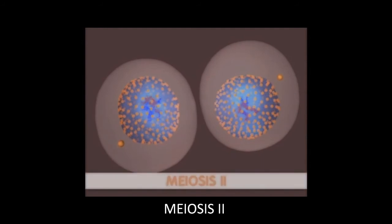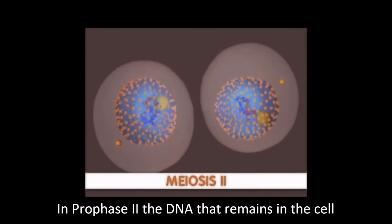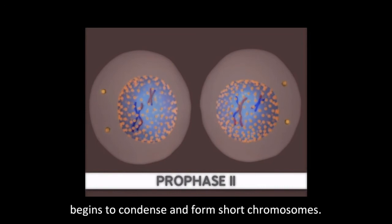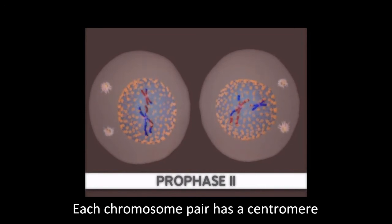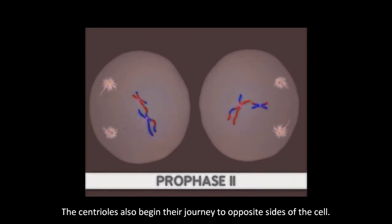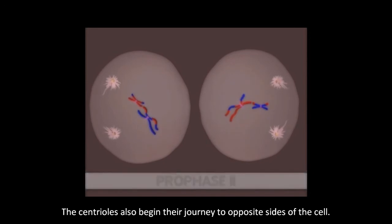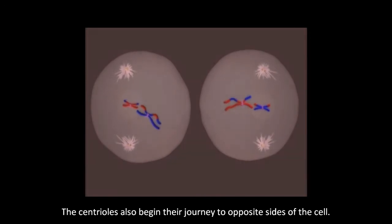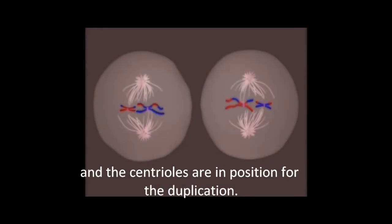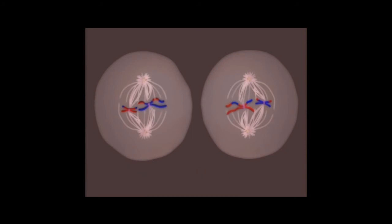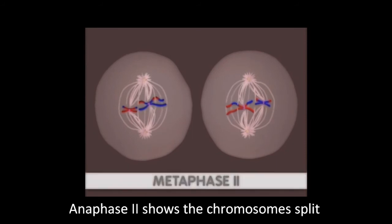Meiosis two: In prophase two, the DNA that remains in the cell begins to condense and form short chromosomes. Each chromosome pair has a centromere. The centrioles begin their journey to opposite sides of the cell. In metaphase two, all of the chromosomes line up along the center of the cell and centrioles are in position for duplication.